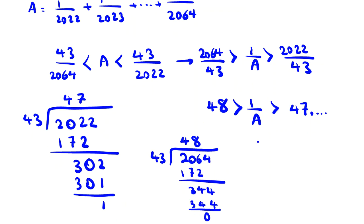So A, this one, is less than 48, greater than this. So floor of 1 over A is exactly equal to, because it is what? 47 between 47 and 48, this number. So the integer part or floor of 1 over A is exactly equal to 47.